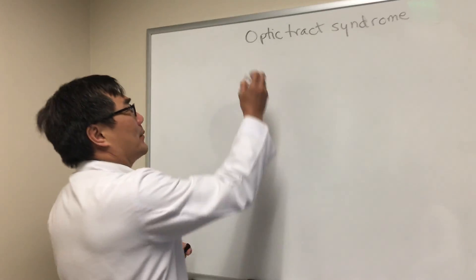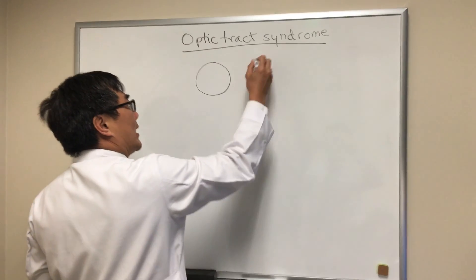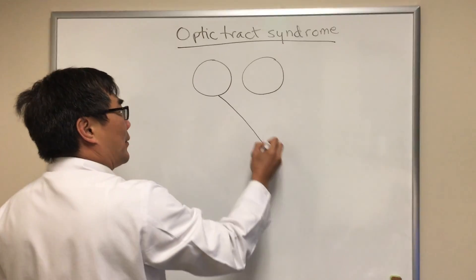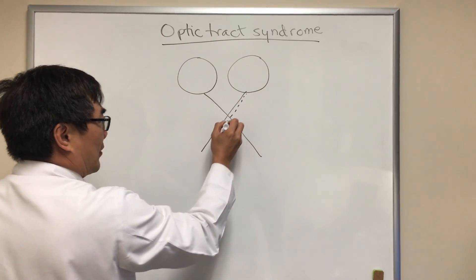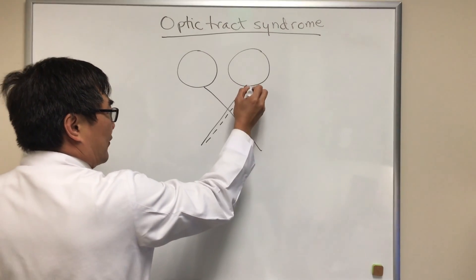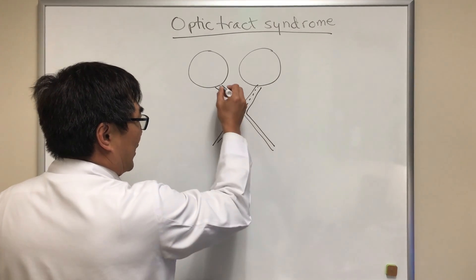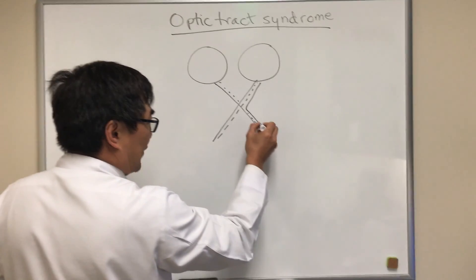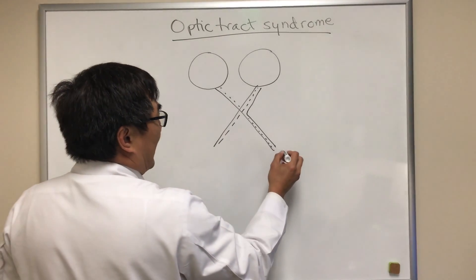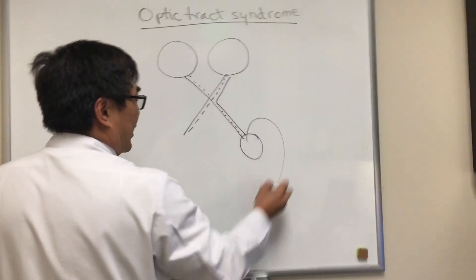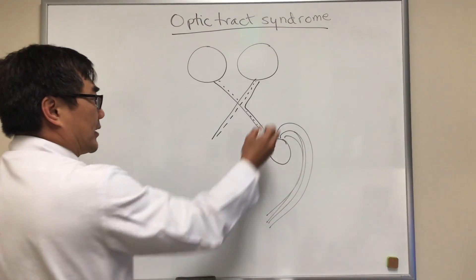Today we're going to be talking about optic tract syndrome. The optic pathway starts in the eyeballs and then crosses in the chiasm — the nasal fiber crosses but the temporal fiber remains uncrossed. The optic tract is a combination of the crossing fiber from one eye and the uncrossed temporal fiber from the fellow eye, and that travels to the geniculate body and then from the radiations to the occipital cortex.